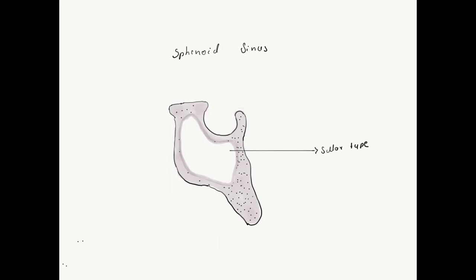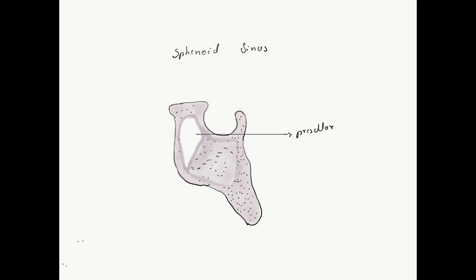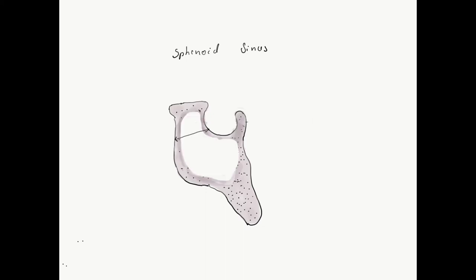The second type of pneumatization is called the Pre-Sella type, where pneumatization does not extend beyond a plane along the anterior wall of the sella. The third type is called the Conchal type, where the entire sella is covered by a solid block of bone underneath and around it, usually seen in children less than 12 years of age. The depth of the sphenoid sinus is the distance between the ostium and the nearest sellar wall, ranging between 12 to 23 mm.